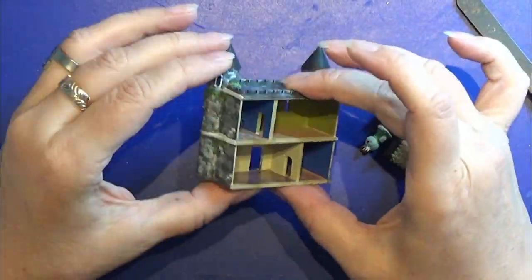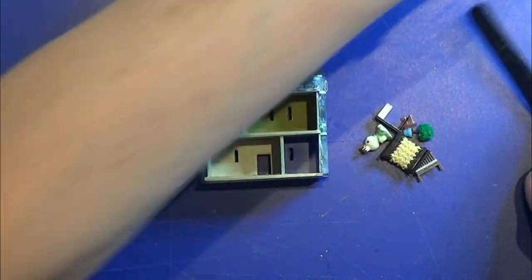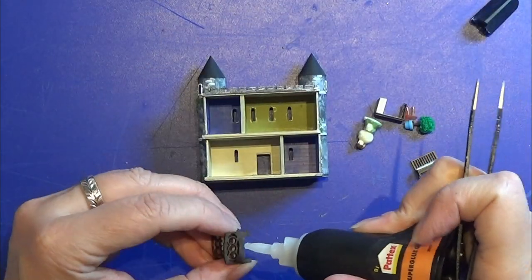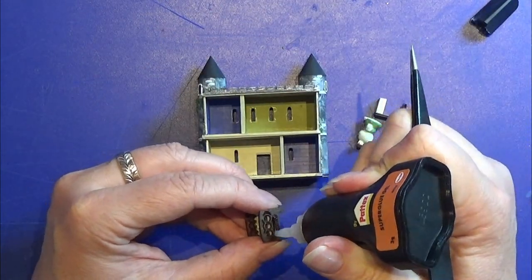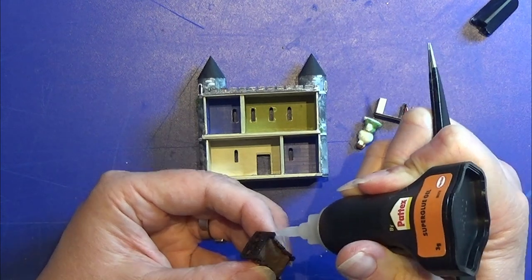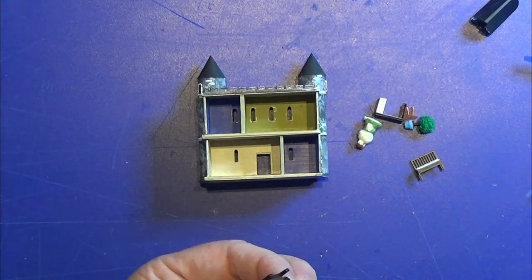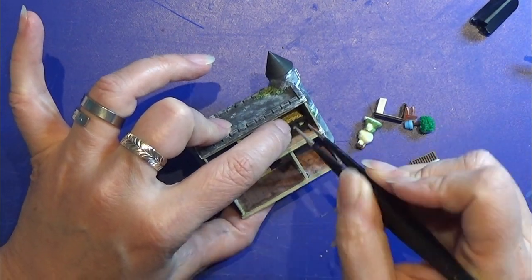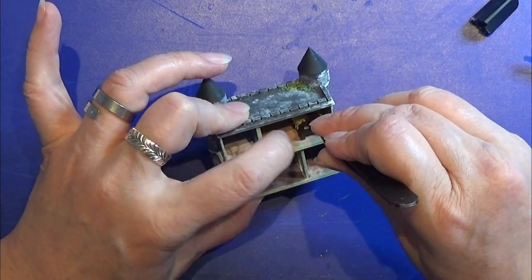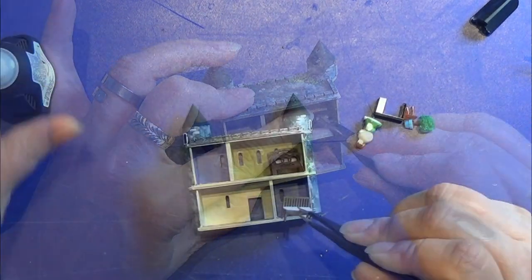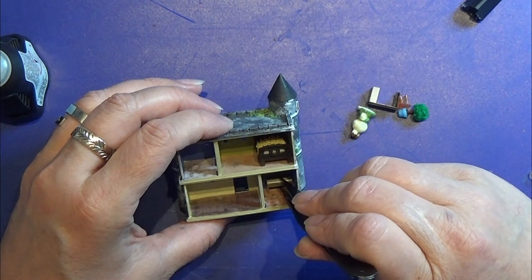I have a few furniture in 1 to 144, and they are a little too big for this little house, but I'm going to use them anyway. I'm going to glue a few of them in place in this little house. And I have this little figurine also, I'm going to place that.